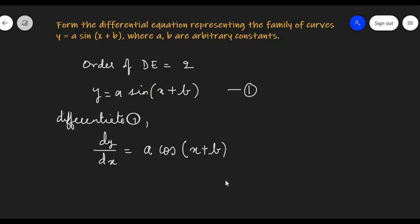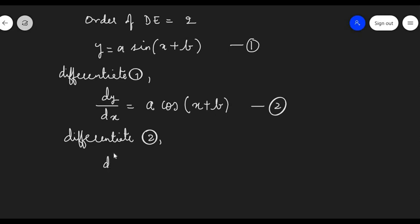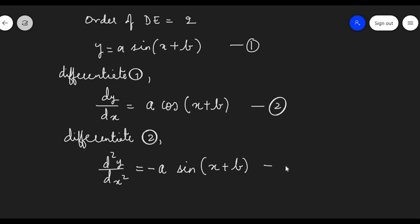We need to differentiate it one more time. Let's call this equation number 2 and differentiate it again. We are going to get the differentiation of dy/dx as d²y/dx², which is the second-order differentiation, and a will remain a constant. The differentiation of cos is minus sin, so we can write this as a·(-sin(x + b)), and call this equation 3.